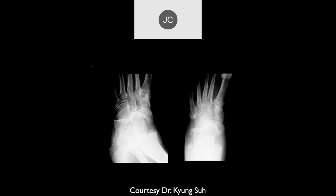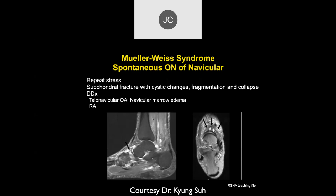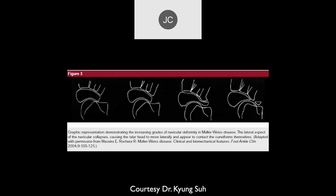Looking at the navicular bone, the central and lateral portions are more sclerotic and markedly flattened laterally, possibly slightly rotated medially. On MRI, cystic changes are visible — typical of chronic repetitive trauma seen elsewhere in the body. There are different stages depending on the amount of trauma involved. With enough compression fracture of the navicular, you can get a bipartite navicular where it actually separates into two fragments. This is end-stage Müller-Weiss syndrome where the navicular bone has essentially been destroyed.